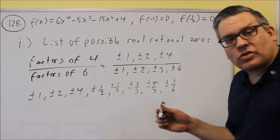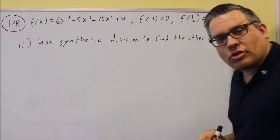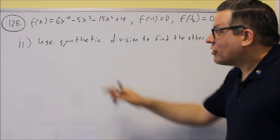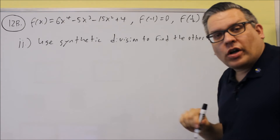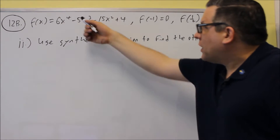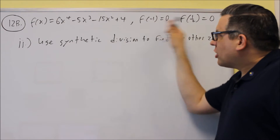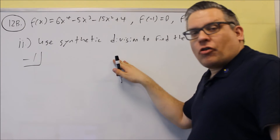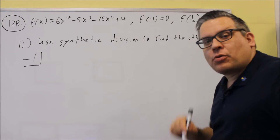For part two, we want to use synthetic division to find the other zeros — that's where we use the two zeros that are given. If you have a fourth power, you'll have to do synthetic division twice because every time you do synthetic, it only drops the power down by one. Now when we write the coefficients, we've got to make sure all powers of x are present. If one's missing, we've got to put in a zero as a placekeeper.